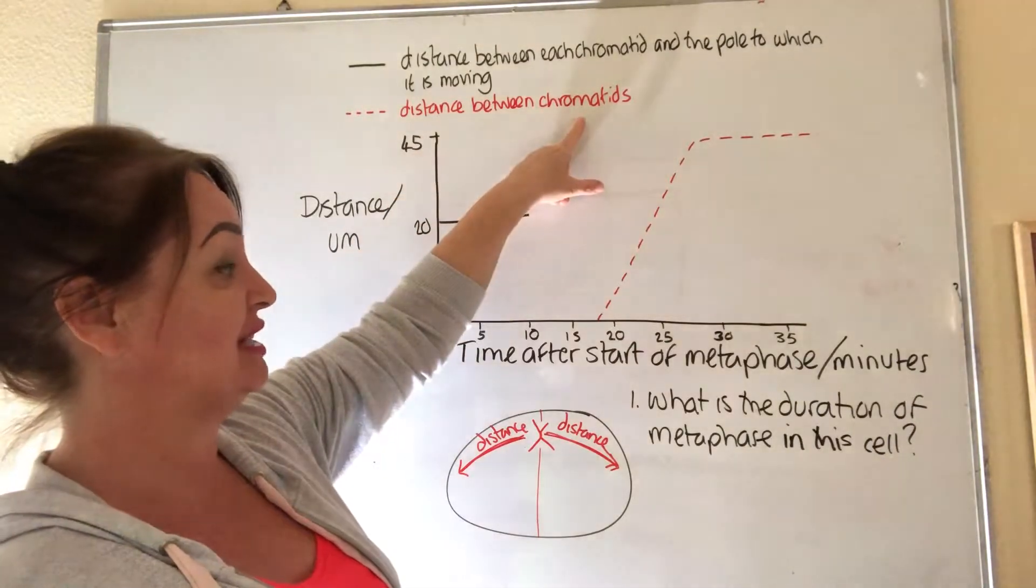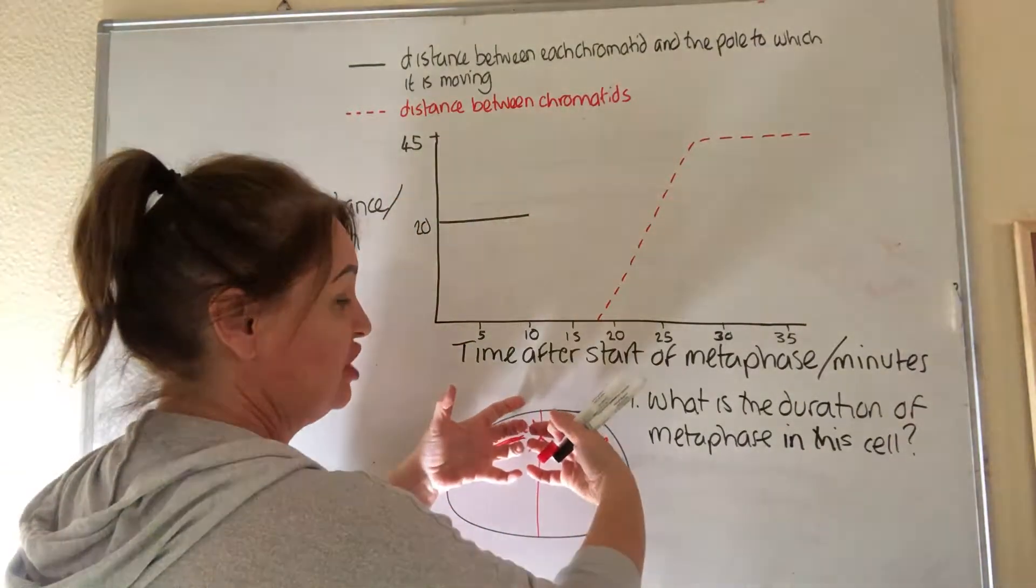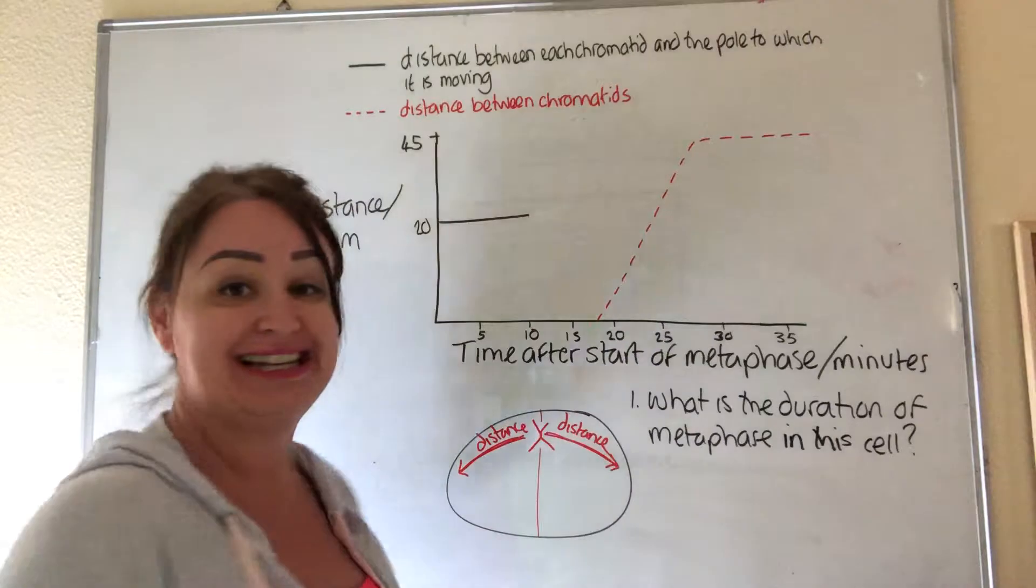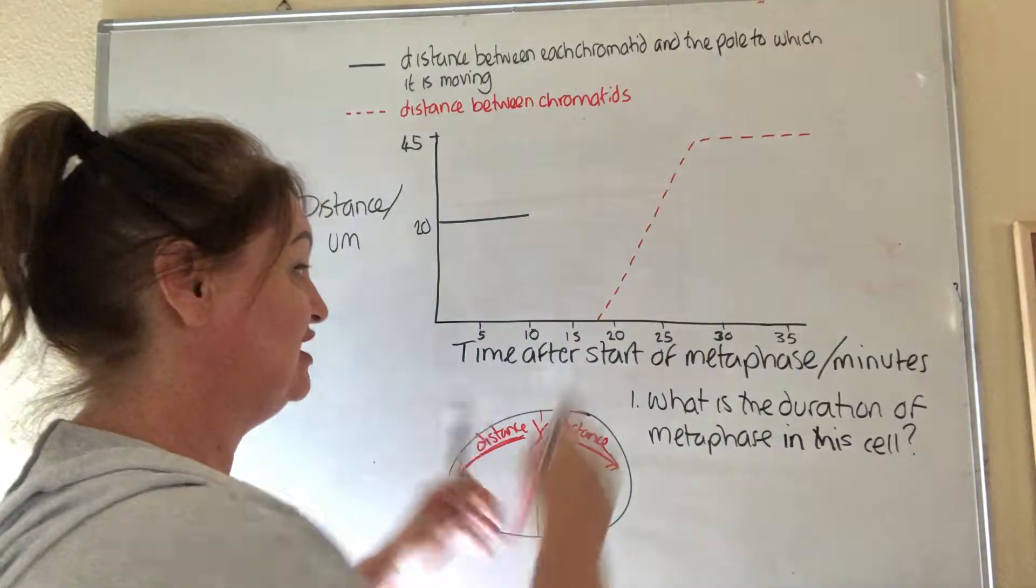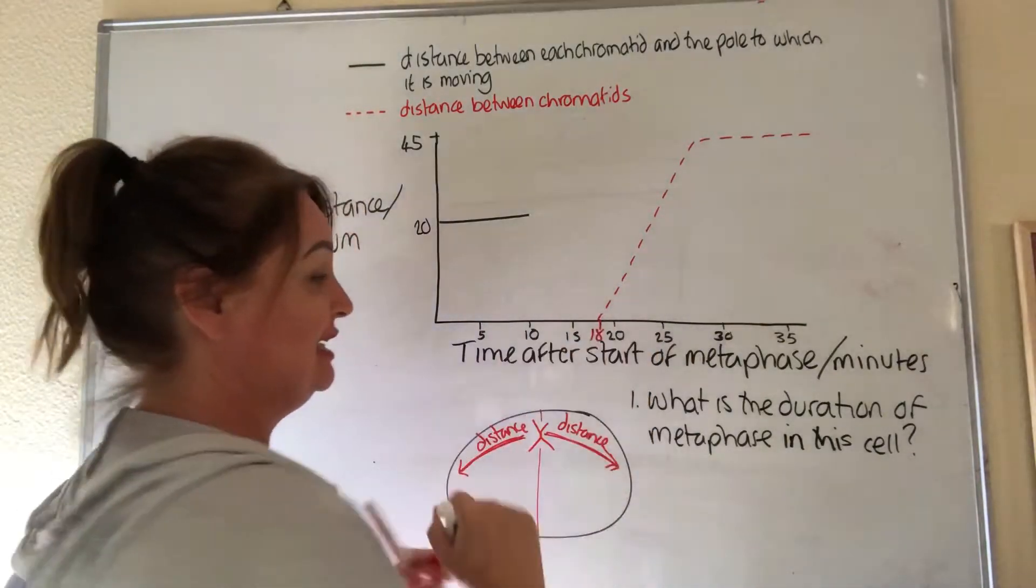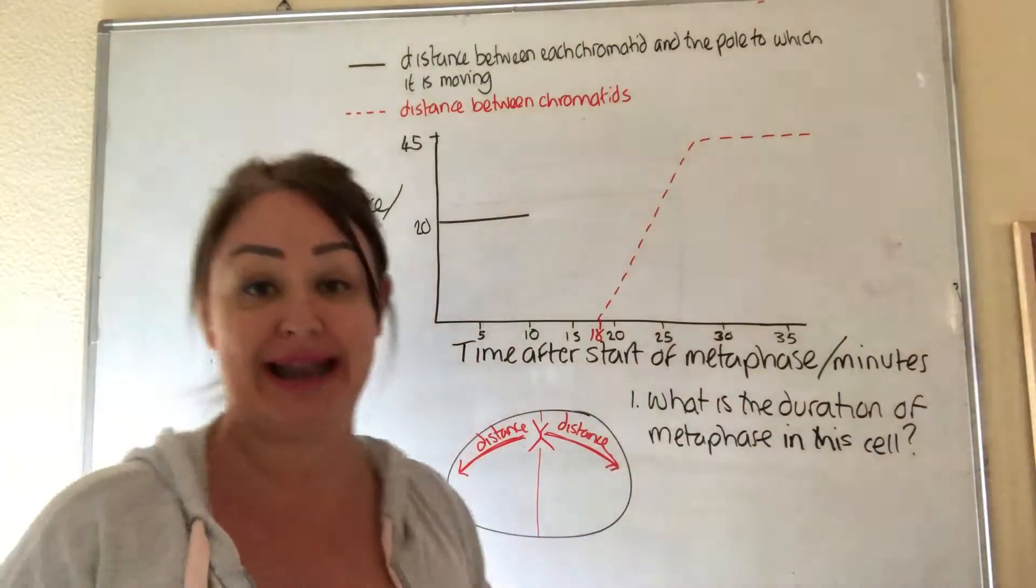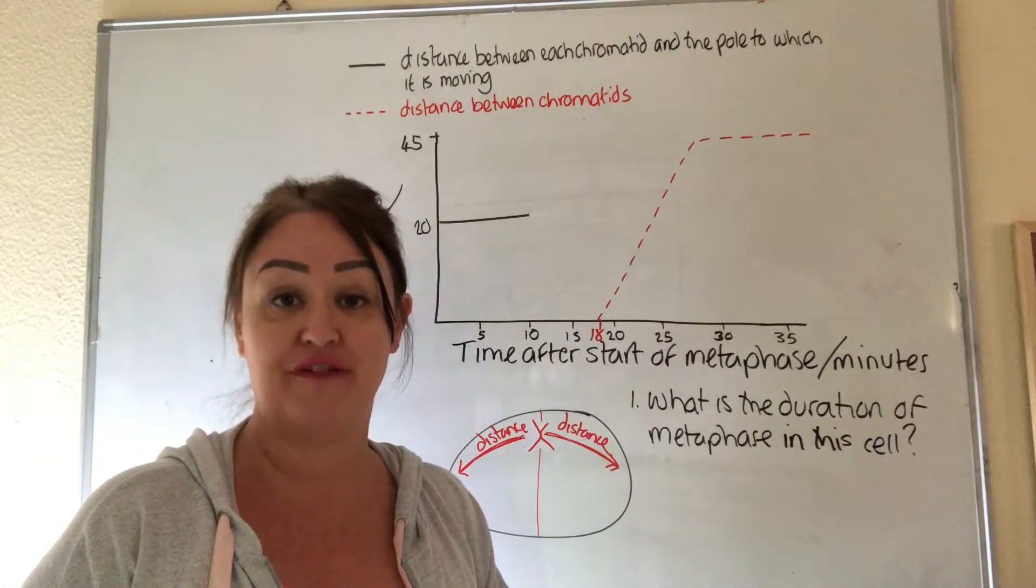it's the distance between chromatids. In other words, as soon as they start being pulled apart, that is anaphase. And what we find, if we read off the graph, that takes place 18 minutes after the start of metaphase.